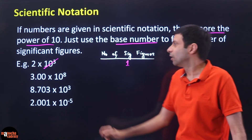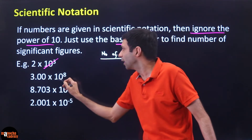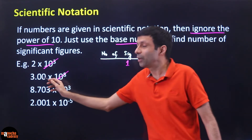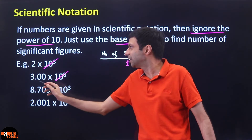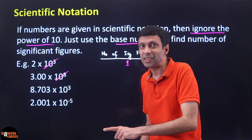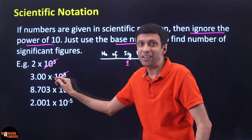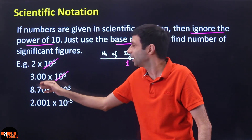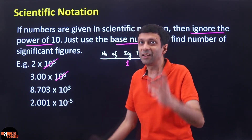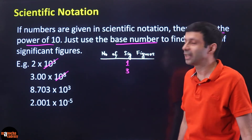Let's look at 3.00 × 10⁸. Ignore the power of 10. The base number 3.00 has a decimal point, so delete all beginning zeros — there are none. So this number has 1, 2, 3 — three significant figures. All three digits are significant.